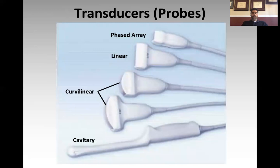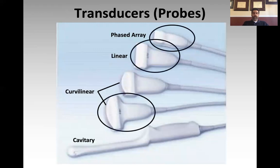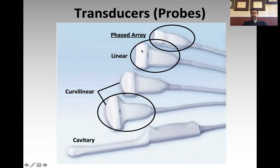As far as probes available to us as critical care practitioners, these are the most commonly used. The phased array probe is the workhorse of critical care and acute care — its small footprint helps you get in between ribs. The linear probe we will use for cannulation of vessels and DVT ultrasonography. And finally the curvilinear probe — a lower frequency probe which gives you really good penetration and depth of field. The bulk of what we do, especially on the diagnostic side, will be done using the phased array probe.